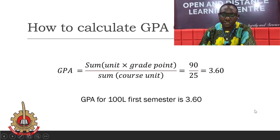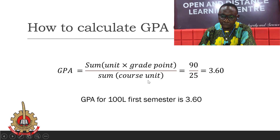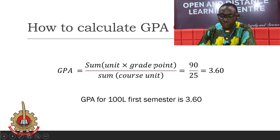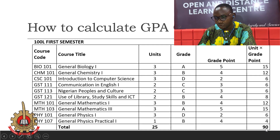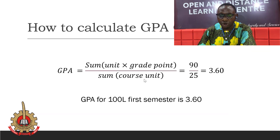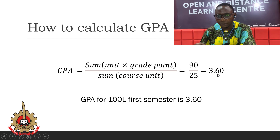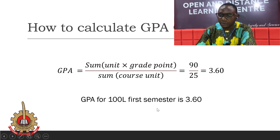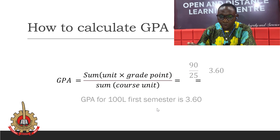The formula for GPA is: sum of (units multiplied by grade points) divided by sum of all units registered. Based on our calculation, the sum of units multiplied by grade points is 90, and the total units registered is 25. So 90 divided by 25 gives 3.60. Your GPA at the end of 100 level first semester is 3.60. That is how to calculate a GPA.